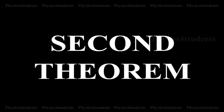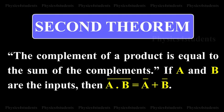The complement of a product is equal to the sum of the complements. If A and B are the input, then A and B, the whole complement, is equal to A complement or B complement.